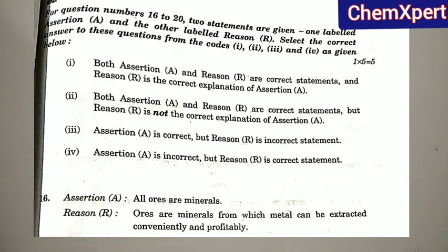From question 16 onwards, questions are of the assertion-reason type. Question 16: Assertion — all ores are minerals. Reason — ores are minerals from which metal can be extracted conveniently and profitably. Both assertion and reason are correct, so option A is the answer.